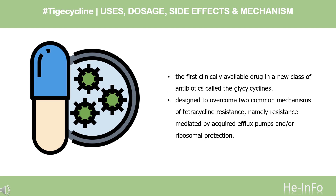Pharmacodynamics: Tigecycline is the first clinically available drug in a new class of antibiotics called the glycylcyclines. Glycylcyclines are derived from tetracycline and are specifically designed to overcome two common mechanisms of tetracycline resistance: resistance mediated by acquired efflux pumps and/or ribosomal protection. Both classes bind to the 30S ribosomal subunit to prevent the aminoacyl-tRNA from binding to the A site of the ribosome.